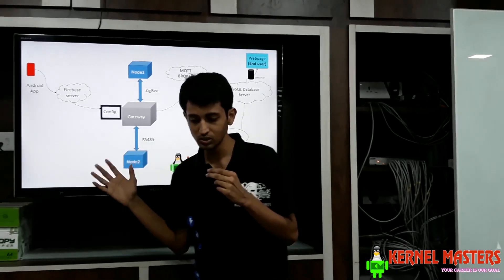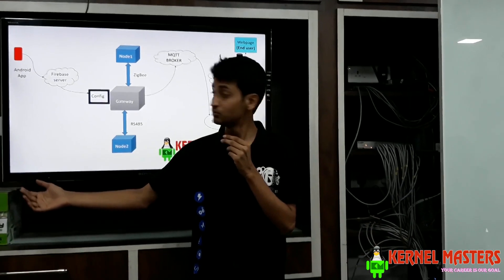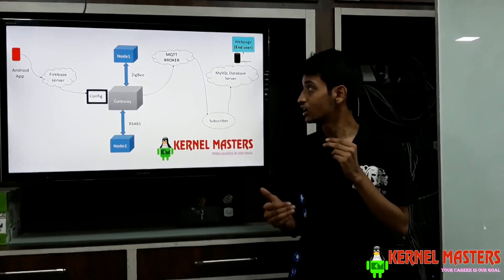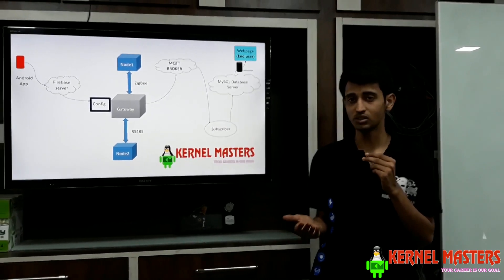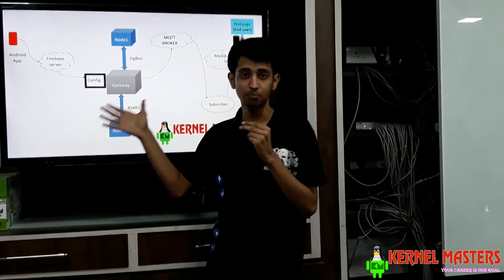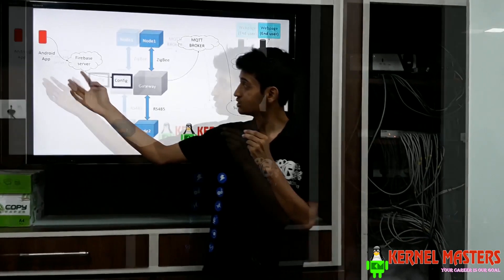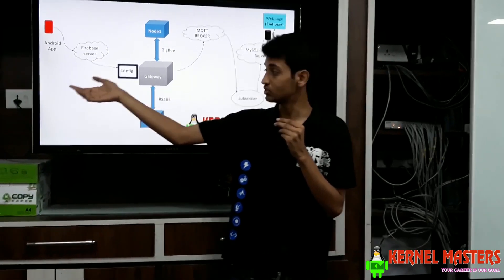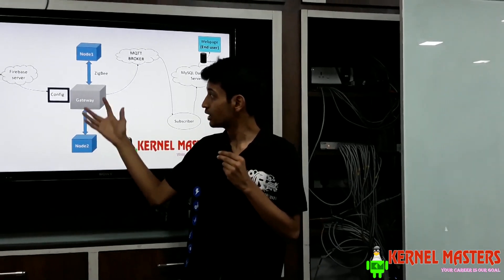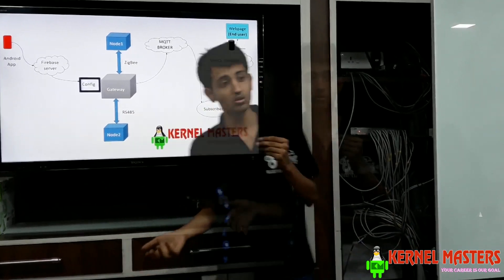To make this configuration file more user-interactive and accessible, we also made an Android app. The job of this app is to get the data from the user and upload it to a Firebase server, which is essentially Google Cloud. On the gateway, we have a Python script running in the background. What that script does is check if there is any change in the server, reads that information, and updates the configuration file. The main C code running on the gateway then takes these changes into account and updates its own parameters.